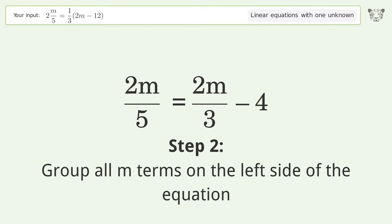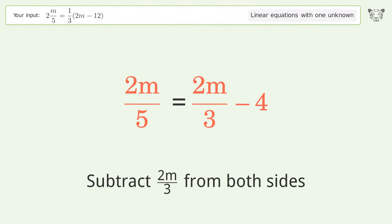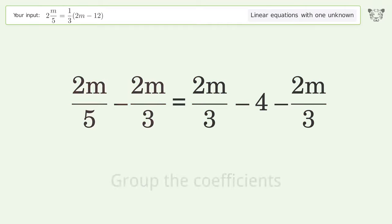Group all m terms on the left side of the equation. Subtract 2m over 3 from both sides. Group the coefficients.